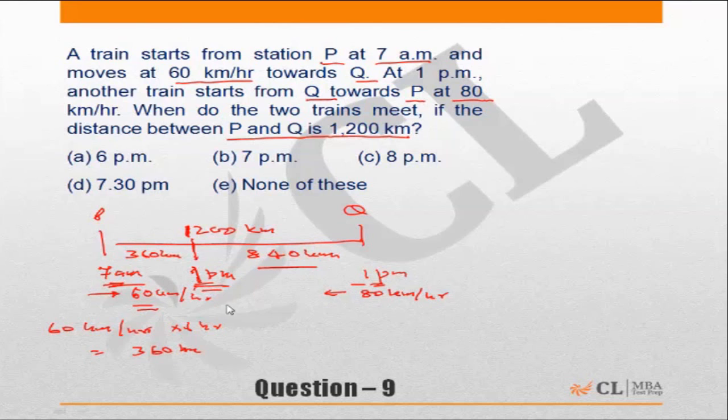When will they meet? They will meet when the cumulative distance covered by both of them is 840 km. Or in other words, the time taken should be 840 km divided by the speed. Speed is nothing but 60 plus 80 because the trains are coming towards each other. So the relative velocity will be 80 plus 60, 140. Or they will meet after 840 by 140 which is nothing but 6. So they will meet 6 hours after 1pm.